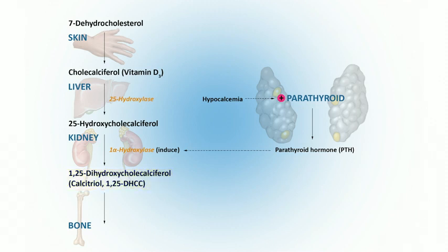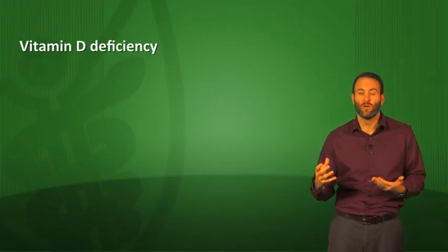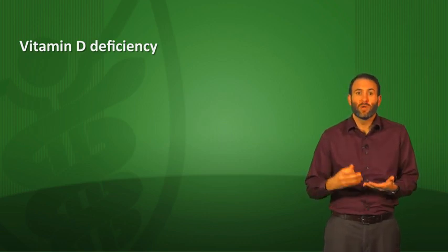Now that we know the different names, what does vitamin D actually do? Vitamin D increases calcium uptake in the intestine by increasing the expression of calcium-binding protein. It also increases absorption of phosphate and magnesium in the intestine. It stimulates PTH-dependent reabsorption of calcium in the distal tubules of the kidney, and stimulates bone reabsorption along with PTH — all of which increase serum calcium. Now let's cover vitamin D deficiency and resistance, which occurs by one of four mechanisms.